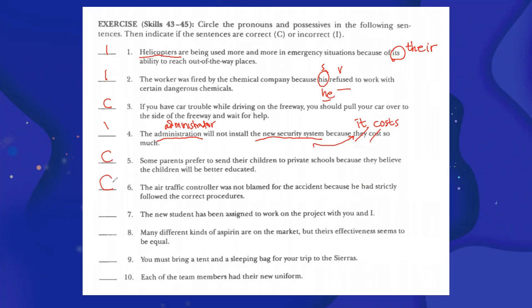The new student has been assigned to work on the project with you and I. Incorrect, incorrect, it should be you and me, you and us, with us, yeah, object form after the word with. Number eight: many different kinds of aspirin are on the market, but their effectiveness seem to be equal. Incorrect, their is wrong, it should be there, possessive objective because behind it is effectiveness, there's a noun. Number nine: you must bring a tent and a sleeping bag for your trip to the Sierras. Correct, correct, okay.